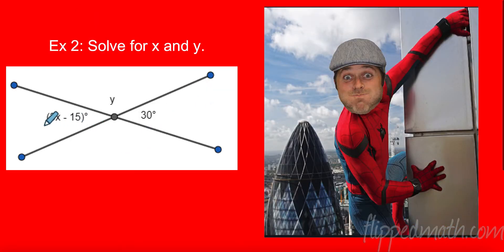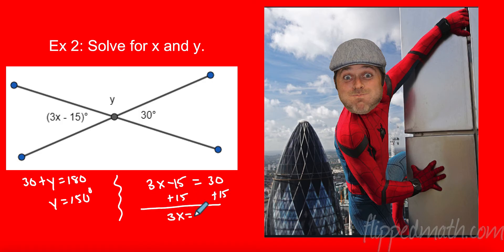We're going to solve for x and y here. So I am going to solve for y first. Because that's a straight angle. That's something I know. So 30 plus y equals 180. Subtract 30. So y is 150 degrees. All right. Now, I notice that 3x minus 15 and 30 degrees are opposite each other. They are vertical angles. So I now know that they are congruent. They are equivalent. So I'm going to set them equal. I'm going to add 15 to both sides. So I know that 3x equals 45. Divide by 3. And x equals 15 degrees. Very powerful.